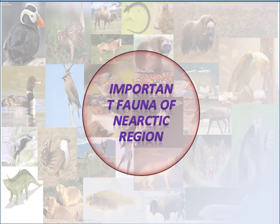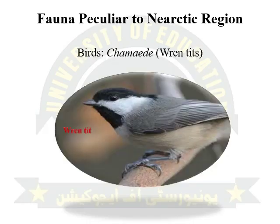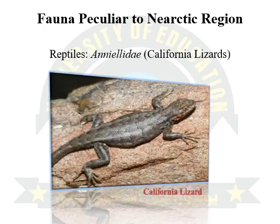Now we will discuss the important fauna of the Nearctic region. There are five endemic families to this region. Mammals include Aplodontidae, where the common animals are mountain beavers. Antilocapridae — common animals included here are pronghorn buck. Unique birds to this area include family Aramidae, where the representative birds are limpkins.